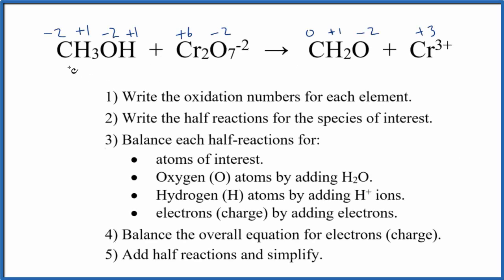Let's balance the redox reaction for CH3OH plus Cr2O7^2-. This is methanol and we have the dichromate ion here. The first thing we need to do is write the oxidation numbers for each element. I've already done that up here. If you need help, there's a link in the description and at the end of the video.